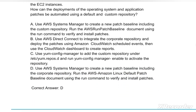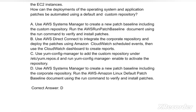Options are: Option A: Use AWS Systems Manager to create a new patch baseline including the custom repository, then run the AWS Run Patch Baseline document using the Run Command to verify and install patches. Option B: Use AWS Direct Connect to integrate the corporate repository and deploy the patches using Amazon CloudWatch scheduled events, then use the CloudWatch dashboard to create reports.